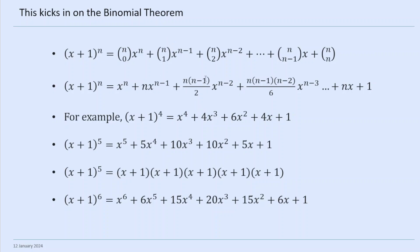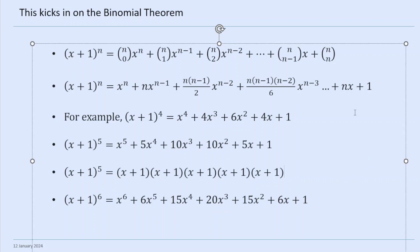For instance, NC2 is n factorial over (n minus 2) factorial times 2 factorial. 2 factorial is just 2, and dividing by (n minus 2) factorial leaves us with n times (n minus 1) on top. Let's do the next one just to make ourselves feel good. NC3 is n factorial over 3 factorial times (n minus 3) factorial. 3 factorial is 3 times 2 times 1, which is 6. Dividing by (n minus 3) factorial leaves n times (n minus 1) times (n minus 2) on top. And on we go.